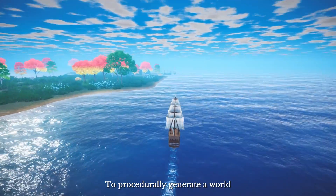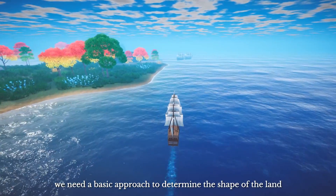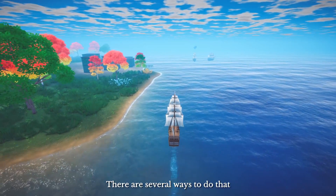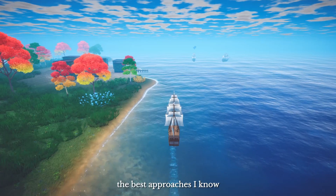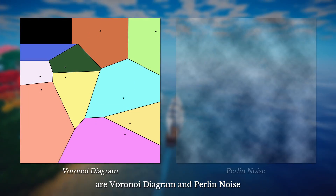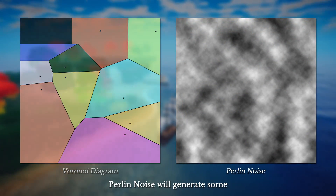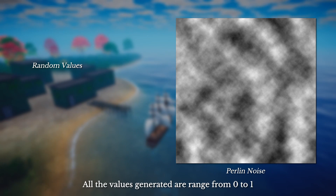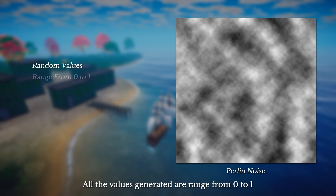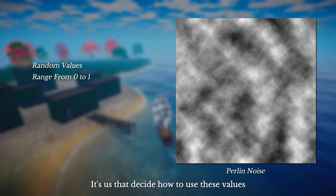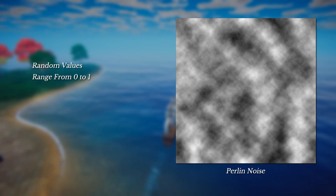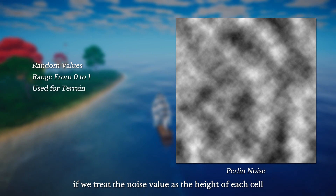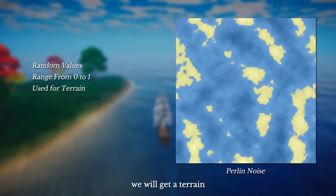To procedurally generate a world, we need a basic approach to determine the shape of the land. There are several ways to do that. The best approaches I know are Voronoi Diagram and Perlin noise. Perlin noise will generate some random values for further processing. All the values generated are ranged from 0 to 1. It is us that decide how to use these values. For example, if we treat the noise value as the height of each cell, we will get a terrain.